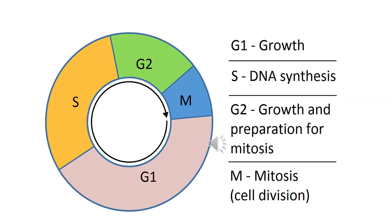In this diagram you can see G1, S, G2, and M — the different phases of the cell cycle. G1 is for growth, S is for DNA synthesis, G2 is for growth and preparation for mitosis, and in M, mitosis and cytokinesis — that is, cell division — take place. The longest phase is Interphase, which is G1, S, and G2 together.